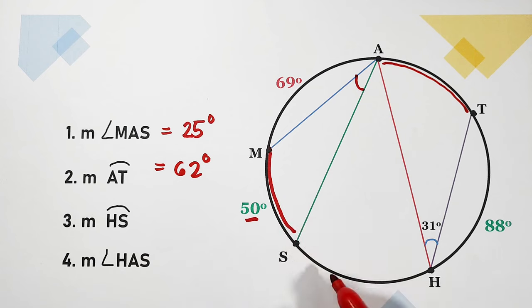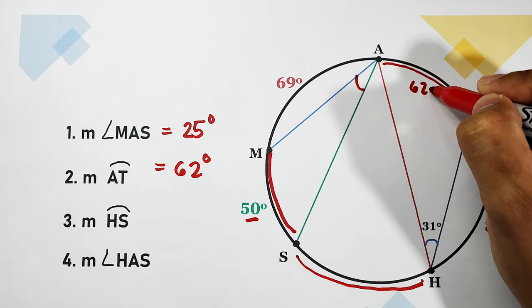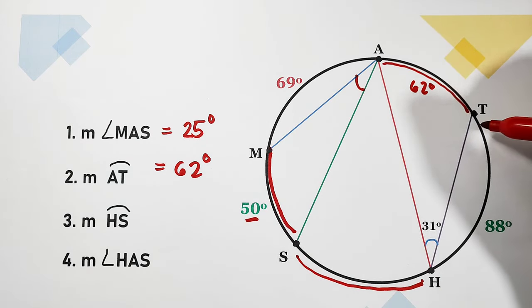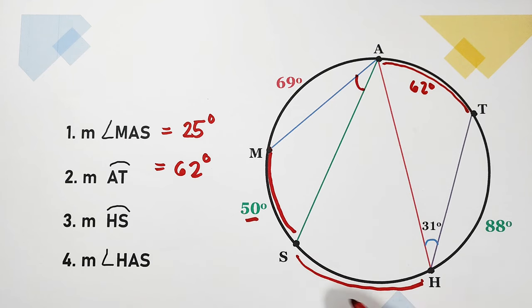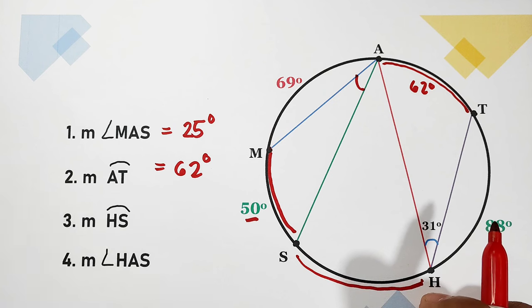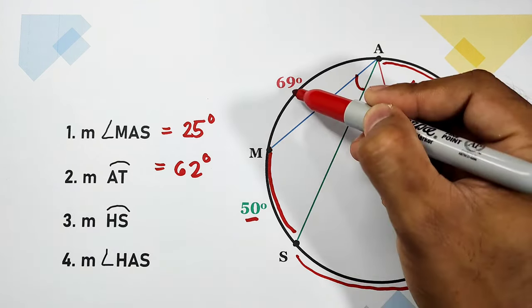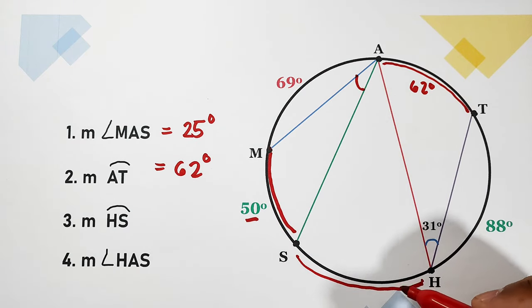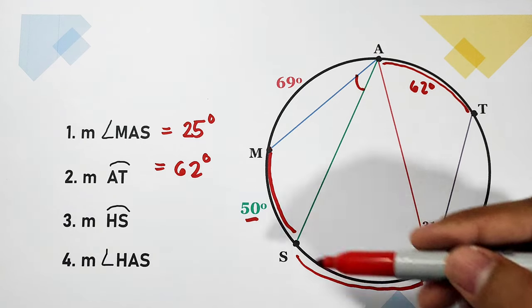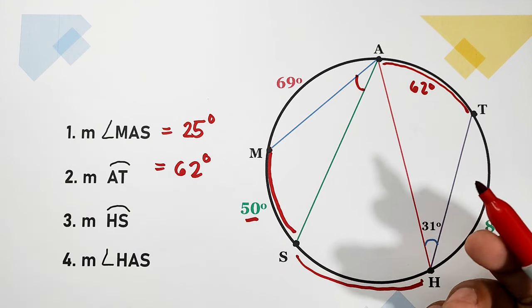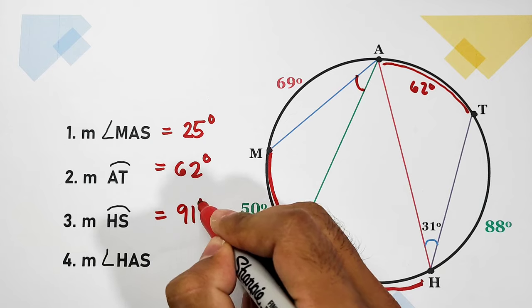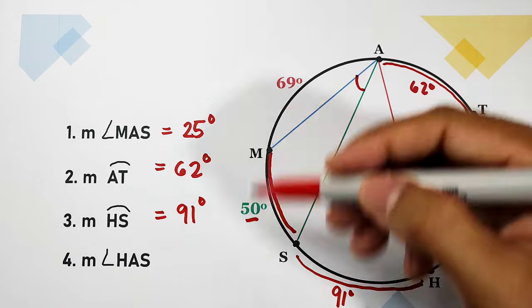For number three, we are looking for arc HS. We know arc AT is 62 degrees, arc MA is 69 degrees, arc TH is 88 degrees, and arc MS is 50 degrees. Since the sum of all arcs in a circle equals 360 degrees, we subtract all known arcs from 360 to find arc HS, which is 91 degrees.